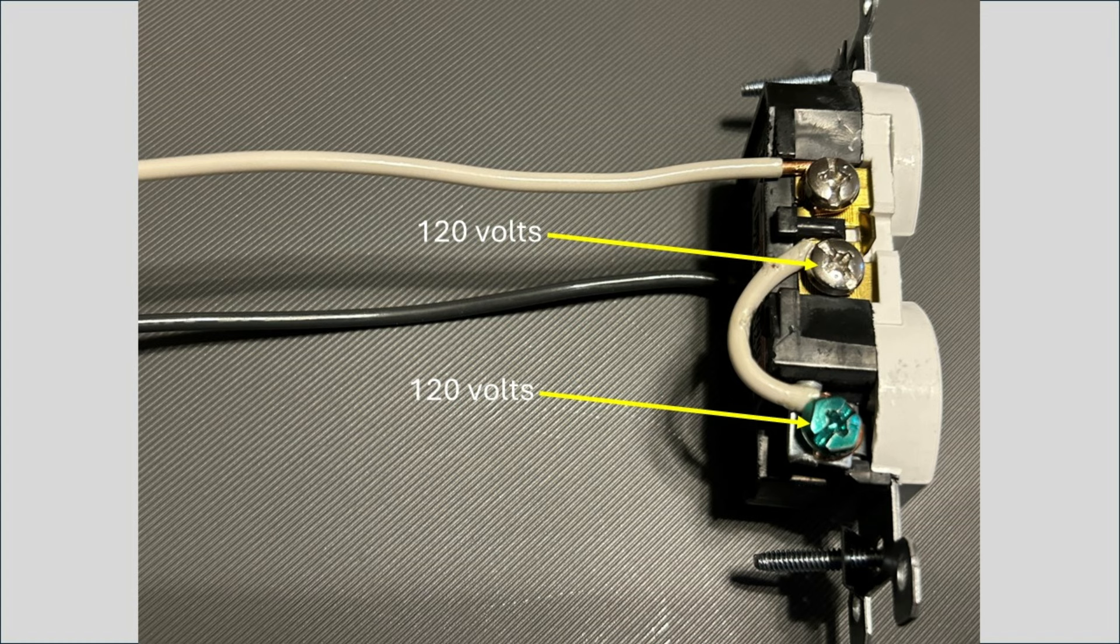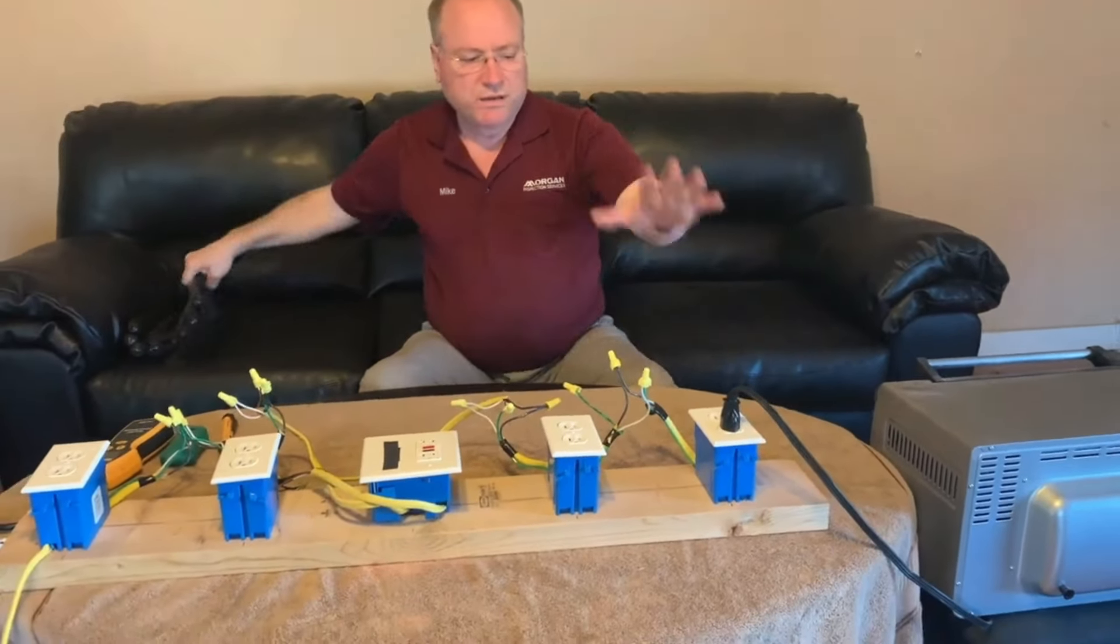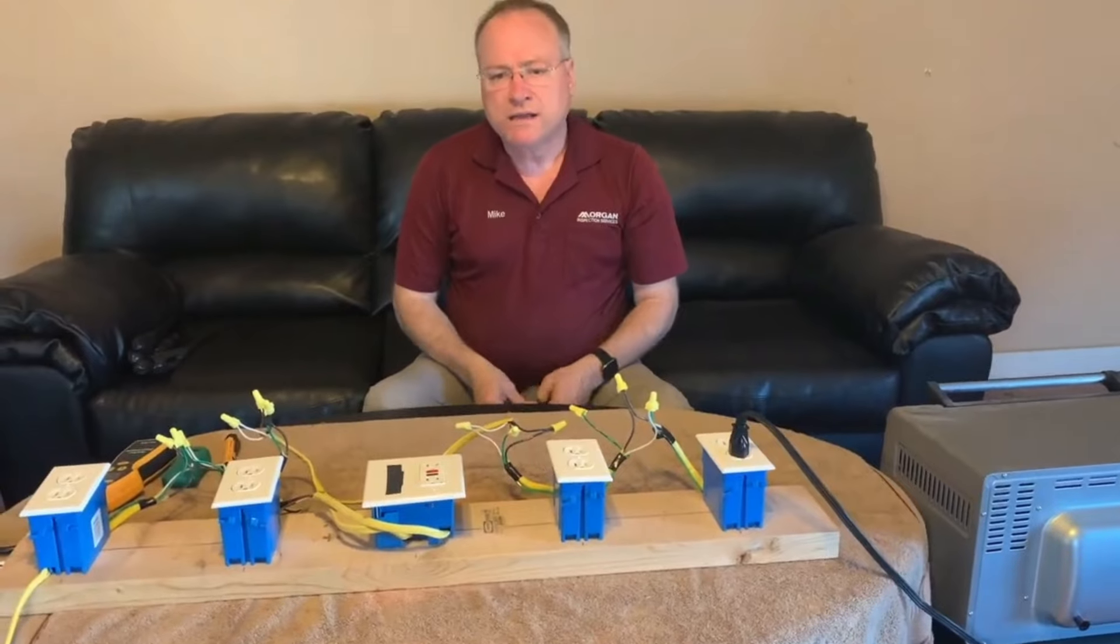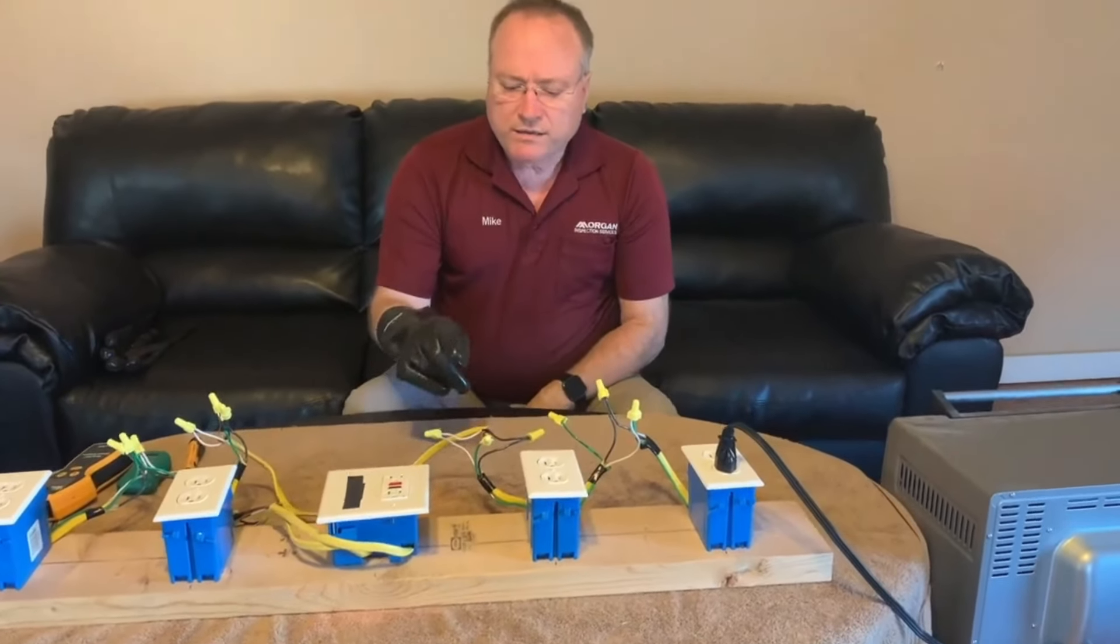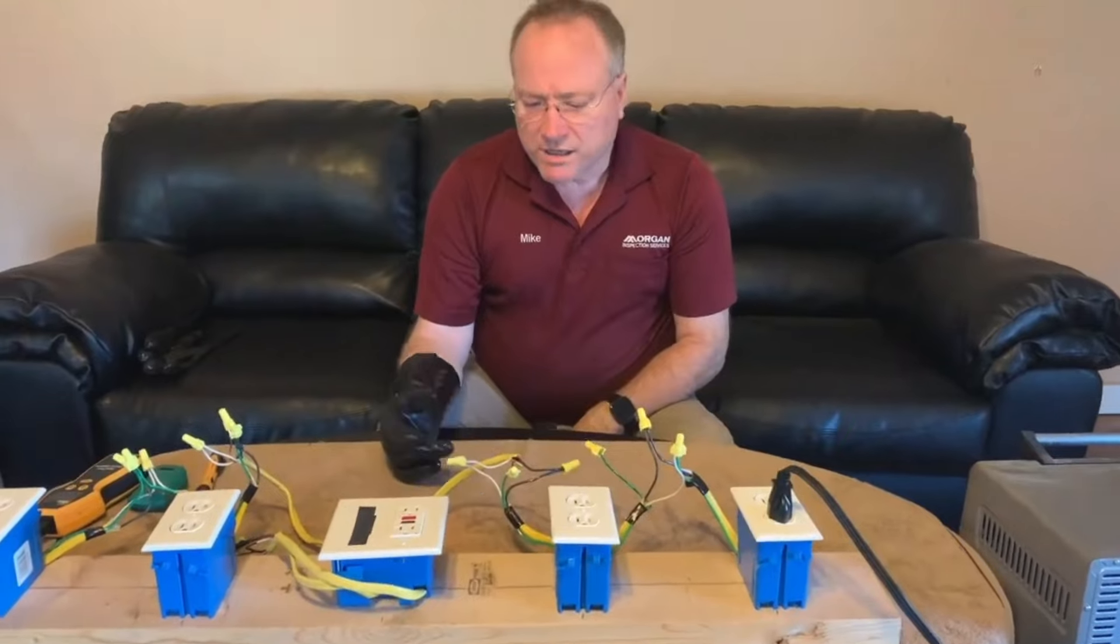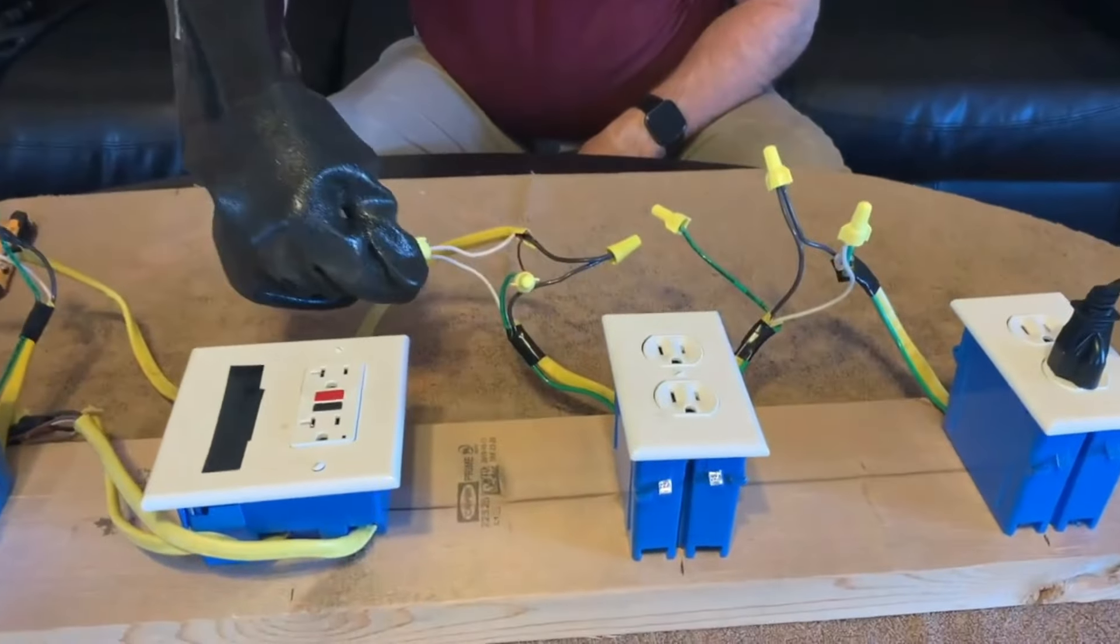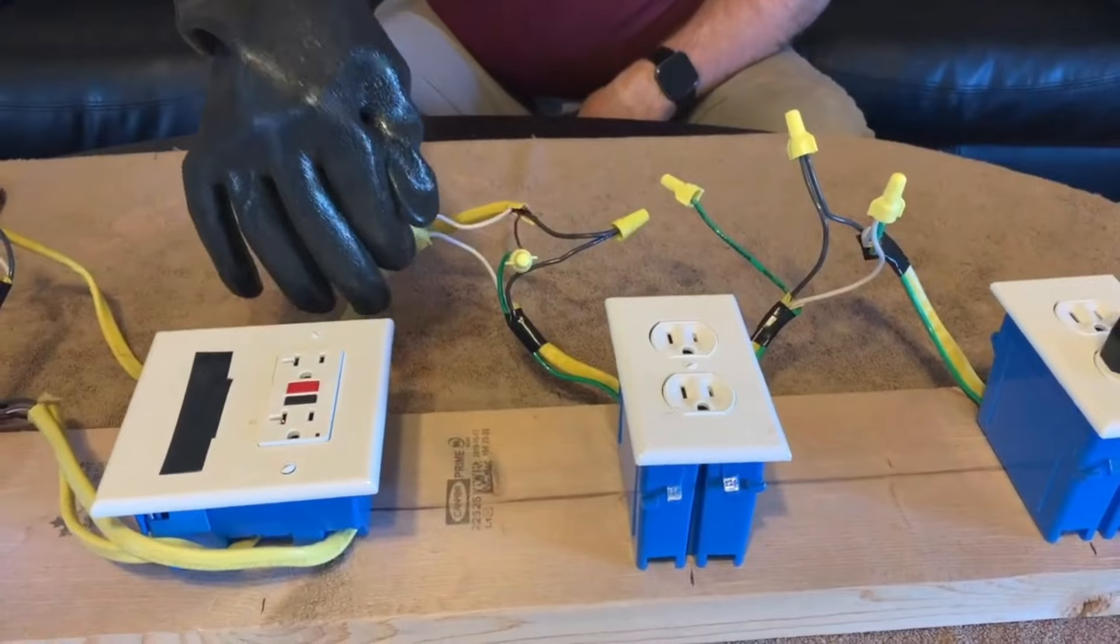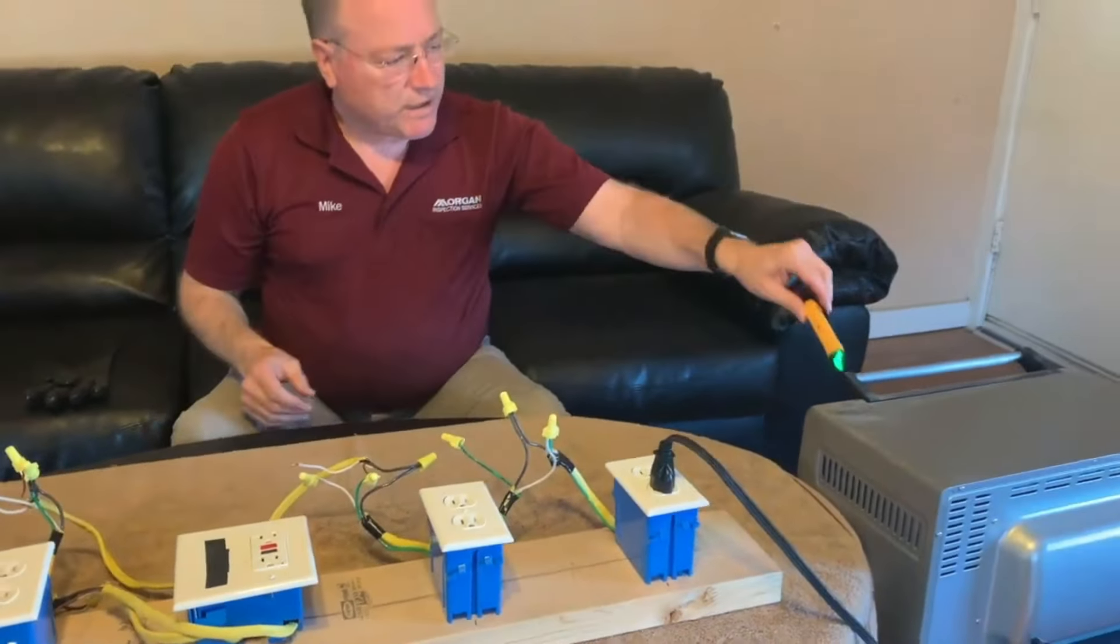And let's watch on my demo board what that does. Let's suppose that upstream of this outlet, maybe at another outlet, maybe in a junction box, maybe at the breaker panel, that a neutral wire comes disconnected. So I'm going to disconnect this neutral wire right here.